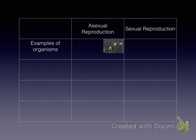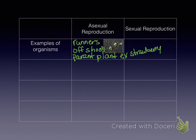Another example is runners. Runners are just the offshoot of a parent plant, like on the strawberry plant. You can see there's a runner and then more growth. Vines grow that way on the ground.